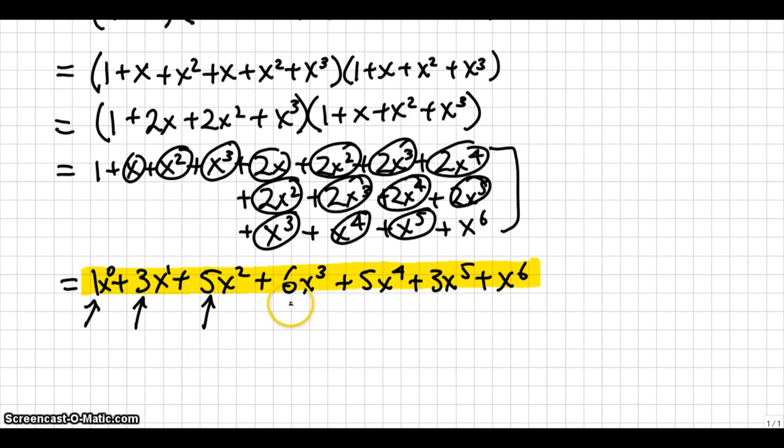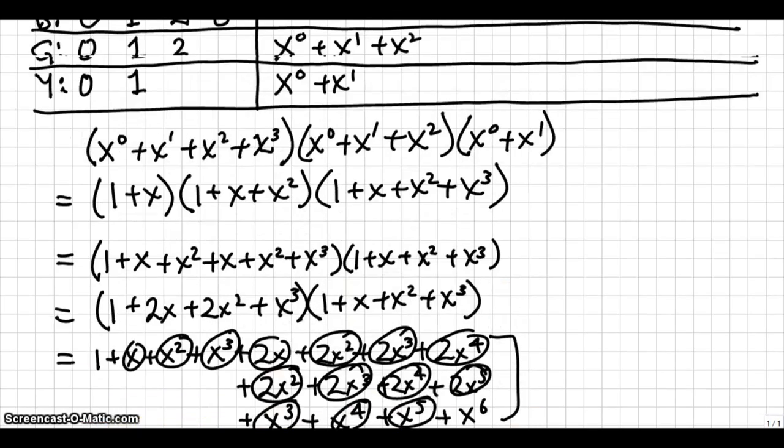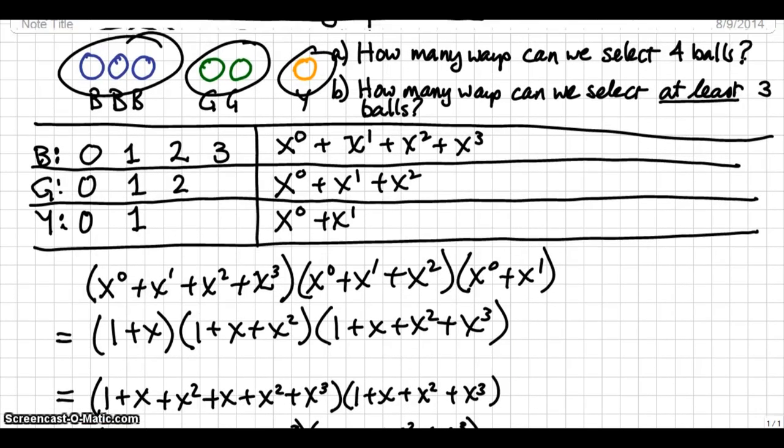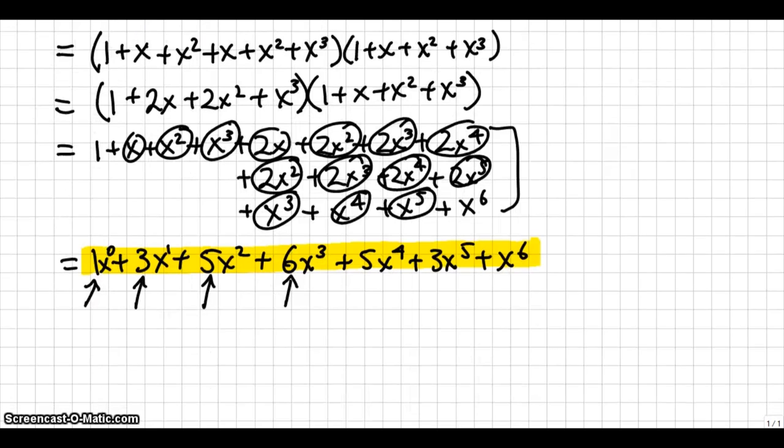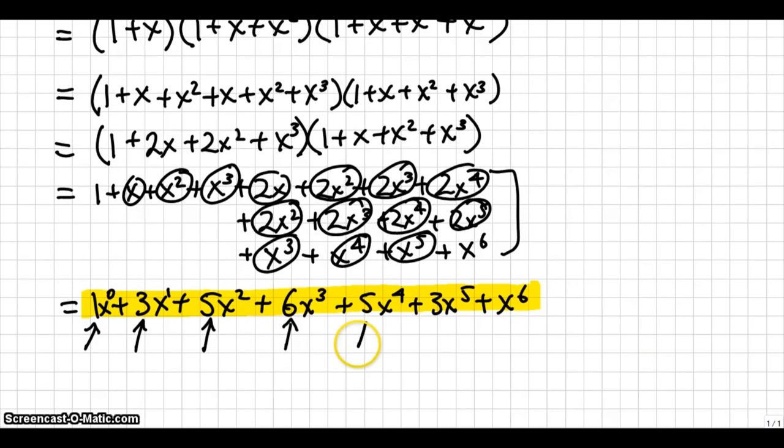As for 2 balls, well, there's 5 ways of choosing 2 balls. 6 ways of choosing 3 balls. And let's see, what did the question originally ask? How many ways can we select 4 balls? That's part A of the question. So the very next term tells us the number of ways to select 4 balls is 5.